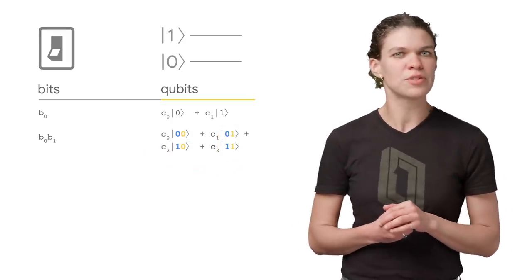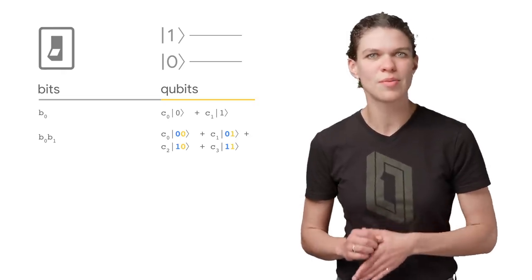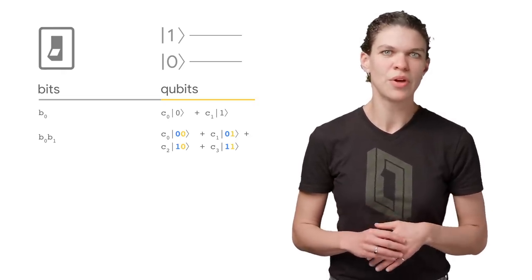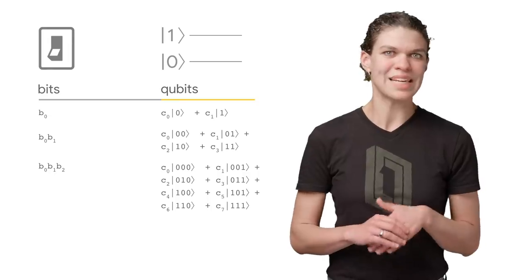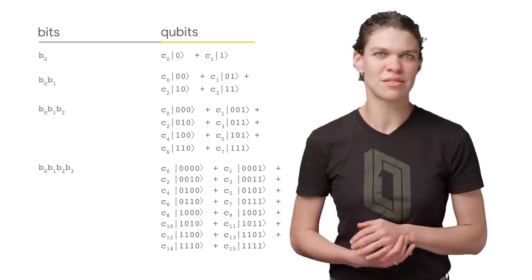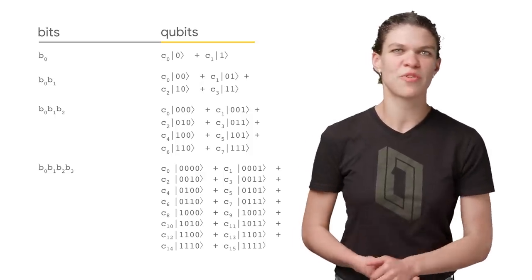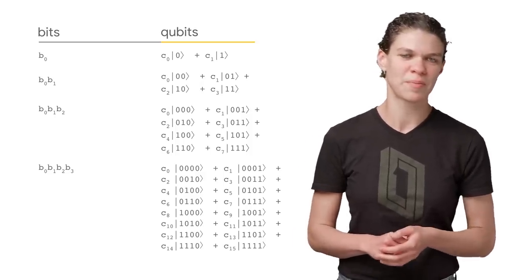This means that in order to fully describe two qubits, we need to consider c's for all possible measurement outcomes we could see. To describe three qubits, we need eight c's. Describing four qubits takes 16 c's. And so on. Each time we add another qubit, it takes twice as much information to describe the whole pile of them. That is the crux of what differentiates quantum hardware. The quantum system lives in a richer space, so that representing n qubits with a classical computer requires two to the n numbers.